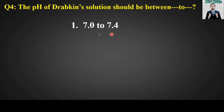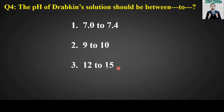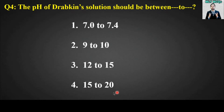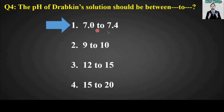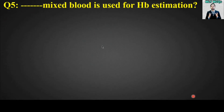MCQ number four: The pH of Drabkin's solution should be between blank to blank. Options are: 7.0 to 7.4, 9 to 10, 12 to 15, or 15 to 20. The right answer is option number one — the pH of Drabkin's solution should be between 7.0 to 7.4.